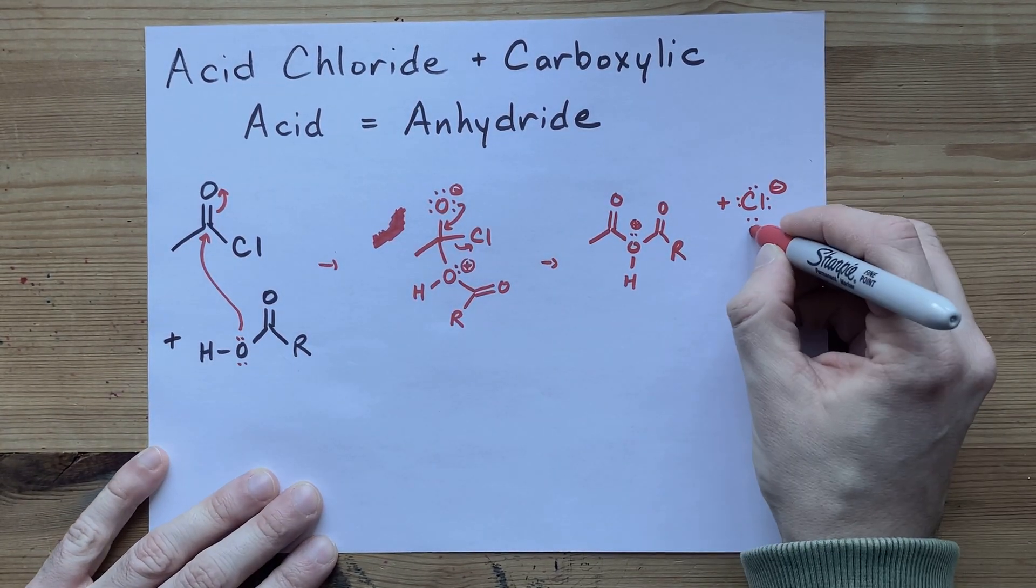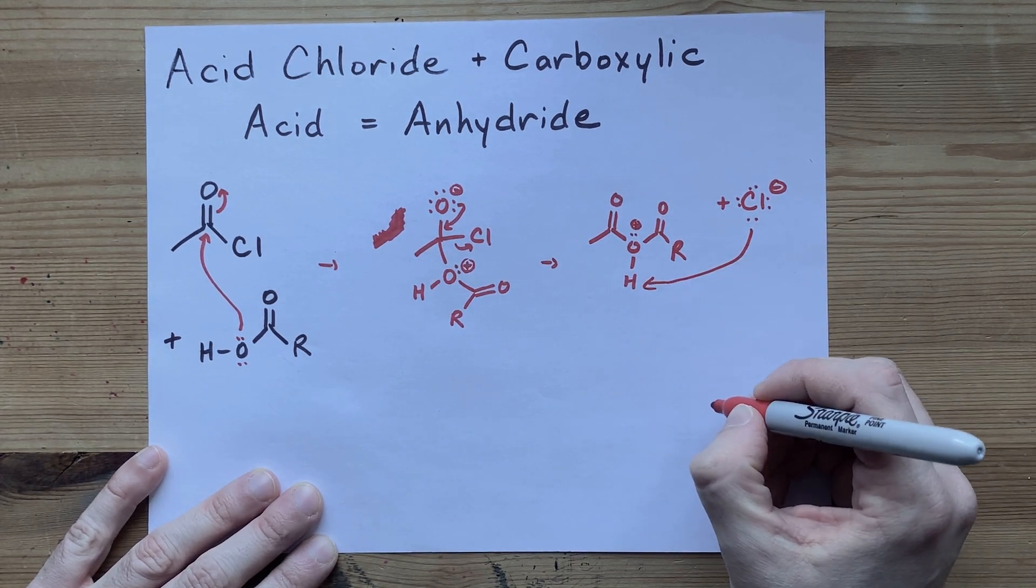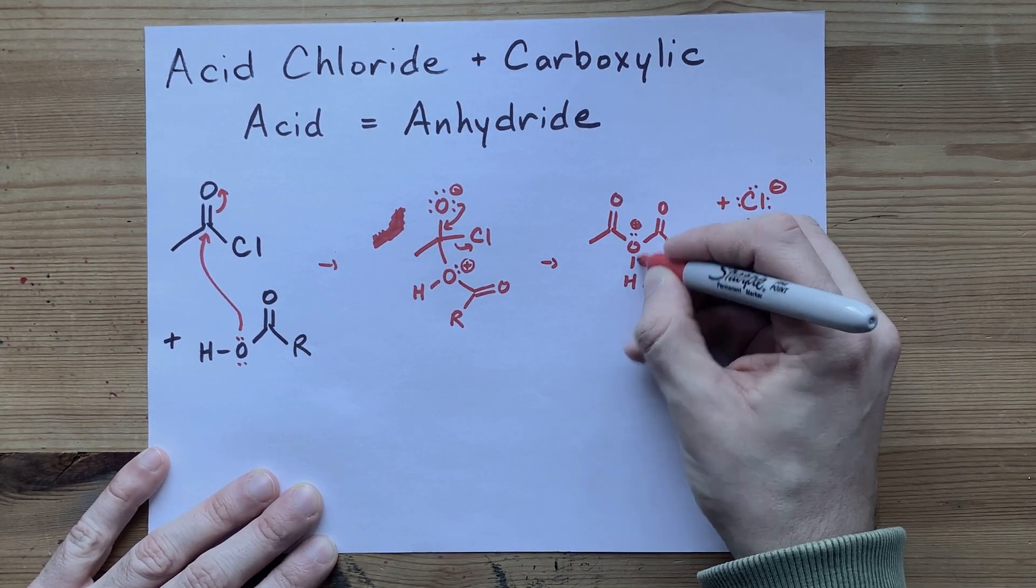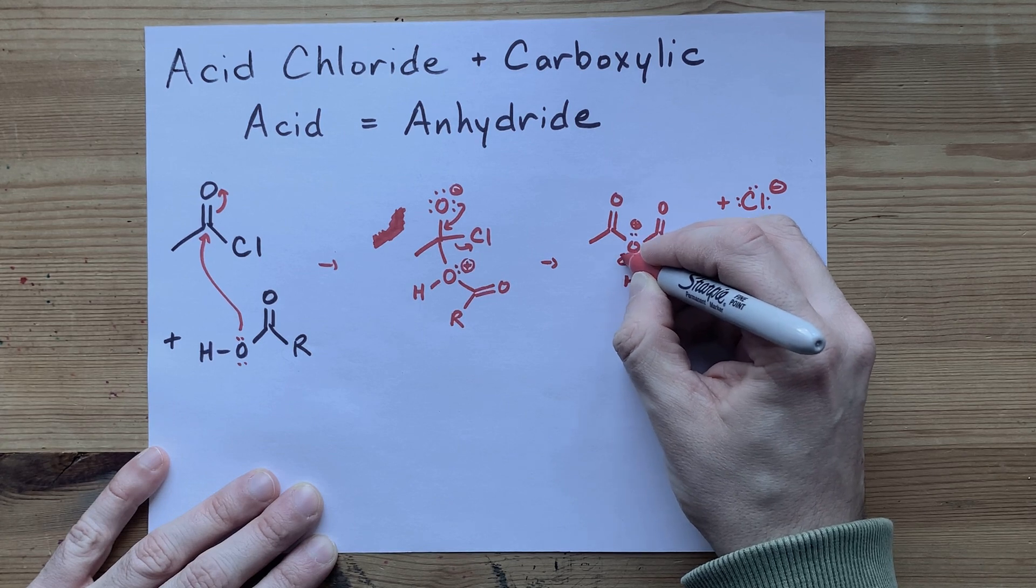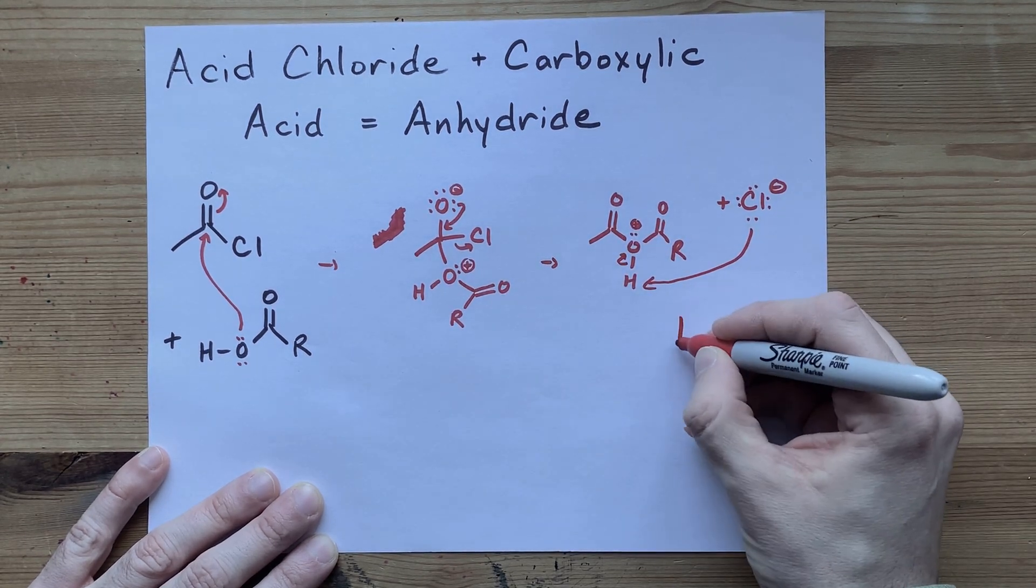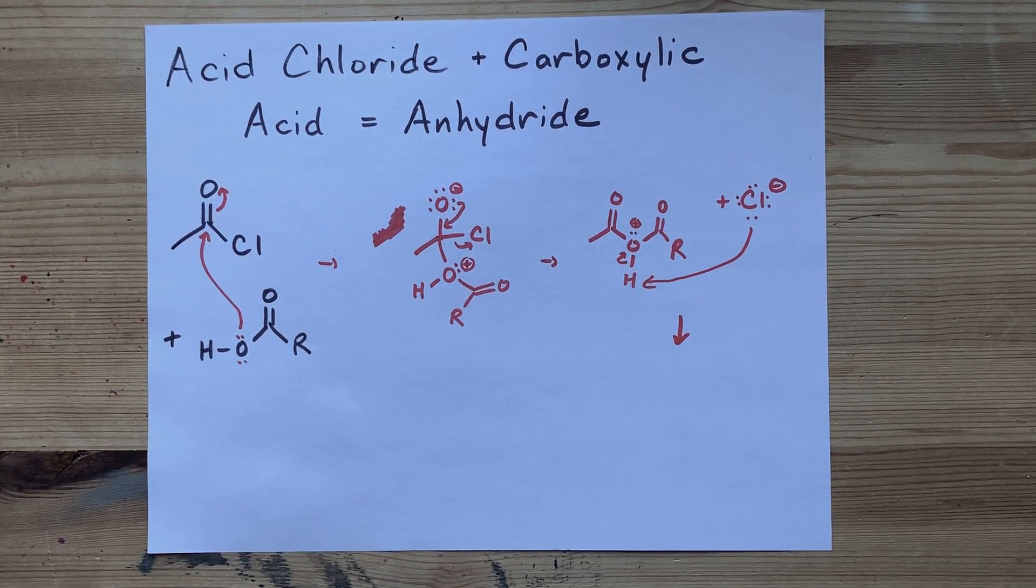And it's also the thing that can help to deprotonate this in the final step. The bonding pair between oxygen and hydrogen now go to the oxygen itself and you end up with your finished anhydride.